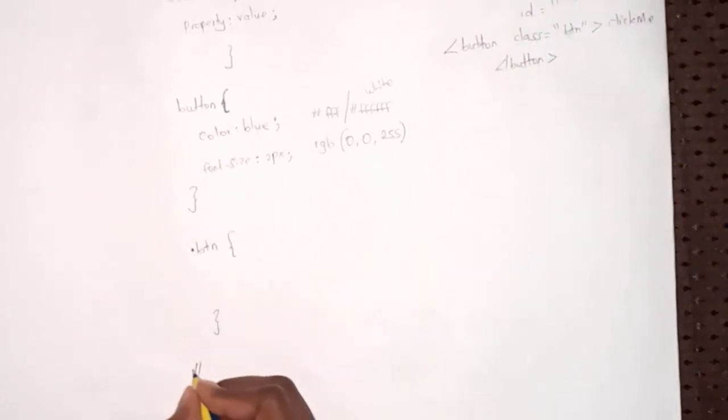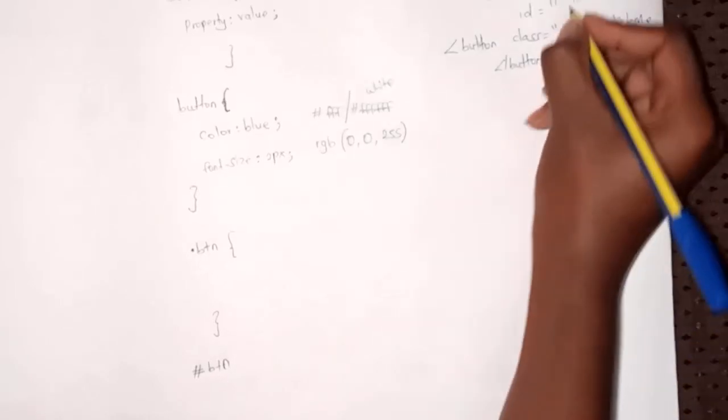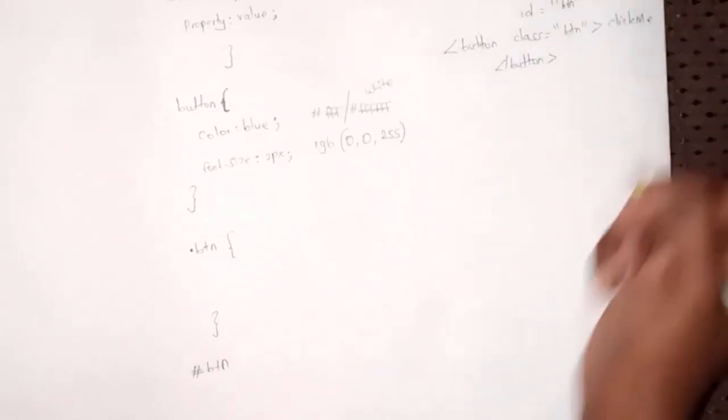If it were an ID, then we would say this is an ID. The hash represents an ID of BTN. Now IDs are unique.